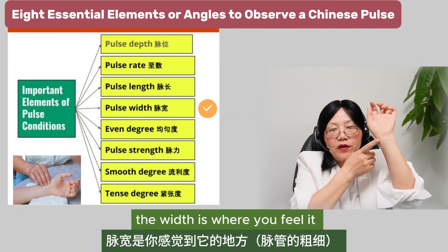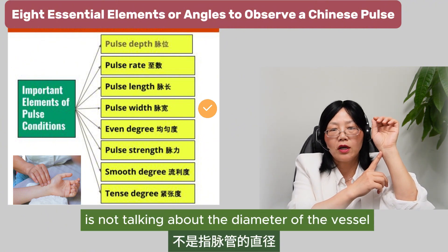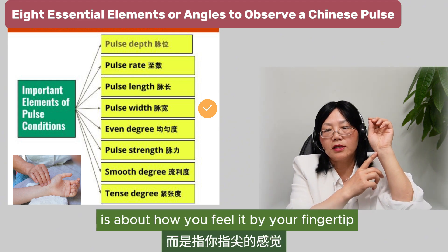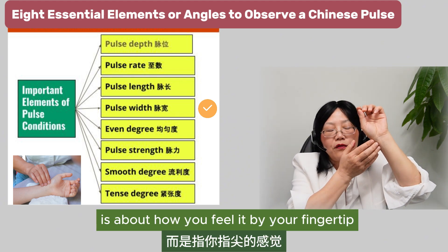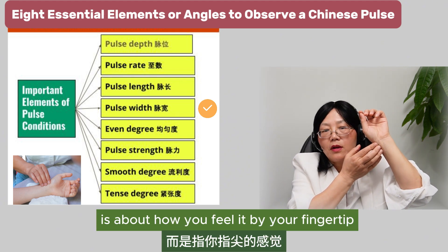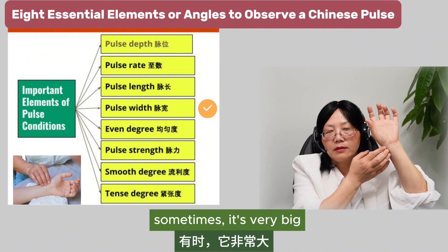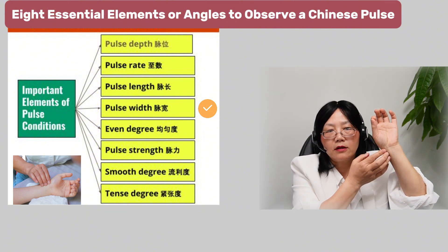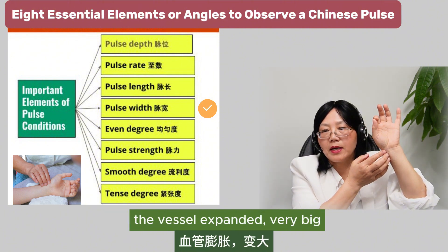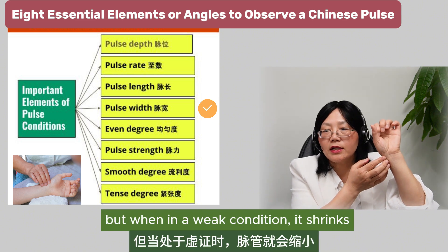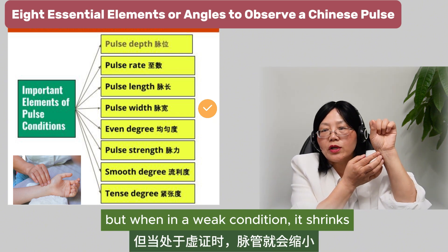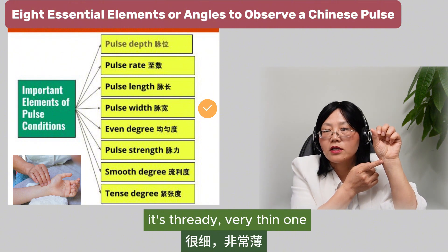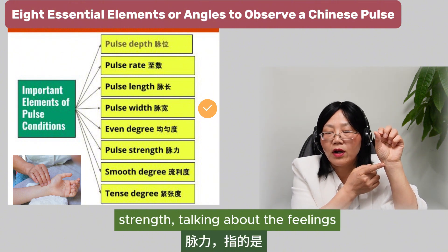The width is what you feel at your fingertip — it's not talking about the diameter of the vessel, but how you feel it. Sometimes it's very big, like under the influence of excess heat the vessel expands. But in a weak condition, it shrinks, so you can feel the width is very small, really very thin.